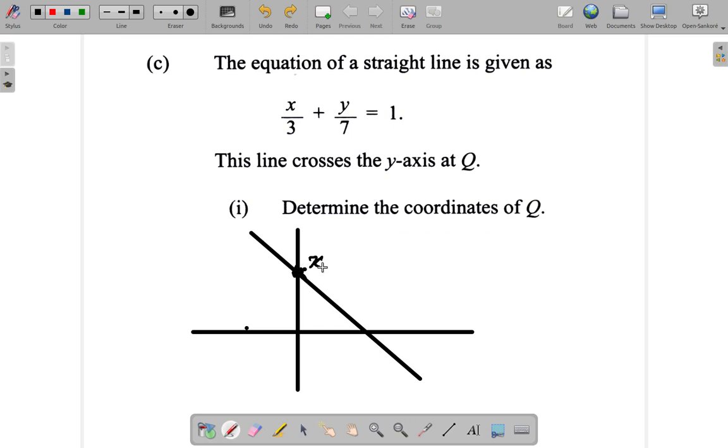Now when x is equal to 0, that happens at Q, wherever it crosses the y-axis. So 0 over 3, when we substitute here, x over 3, we know that x is 0. So you write 0 over 3 plus y over 7 equals 1.